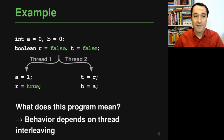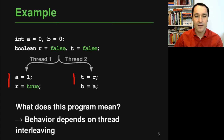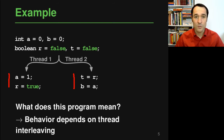To illustrate the challenges of reasoning about concurrent program behavior, let's look at a simple example. A main thread initializes variables a, b, r, and t using Java-like syntax. After initialization, two threads — thread one and thread two — both write to these shared variables. The question is: what does this program actually mean? What is the value of, say, variable a or b after executing this program? The answer is that the behavior depends on the thread interleaving.